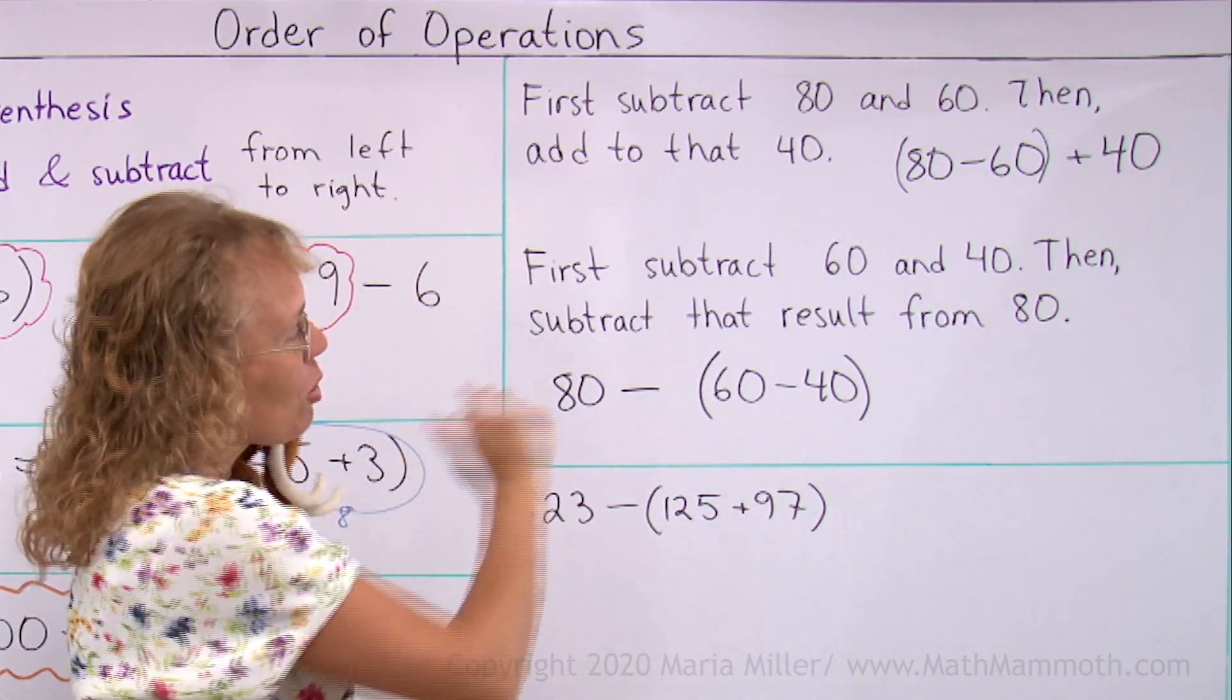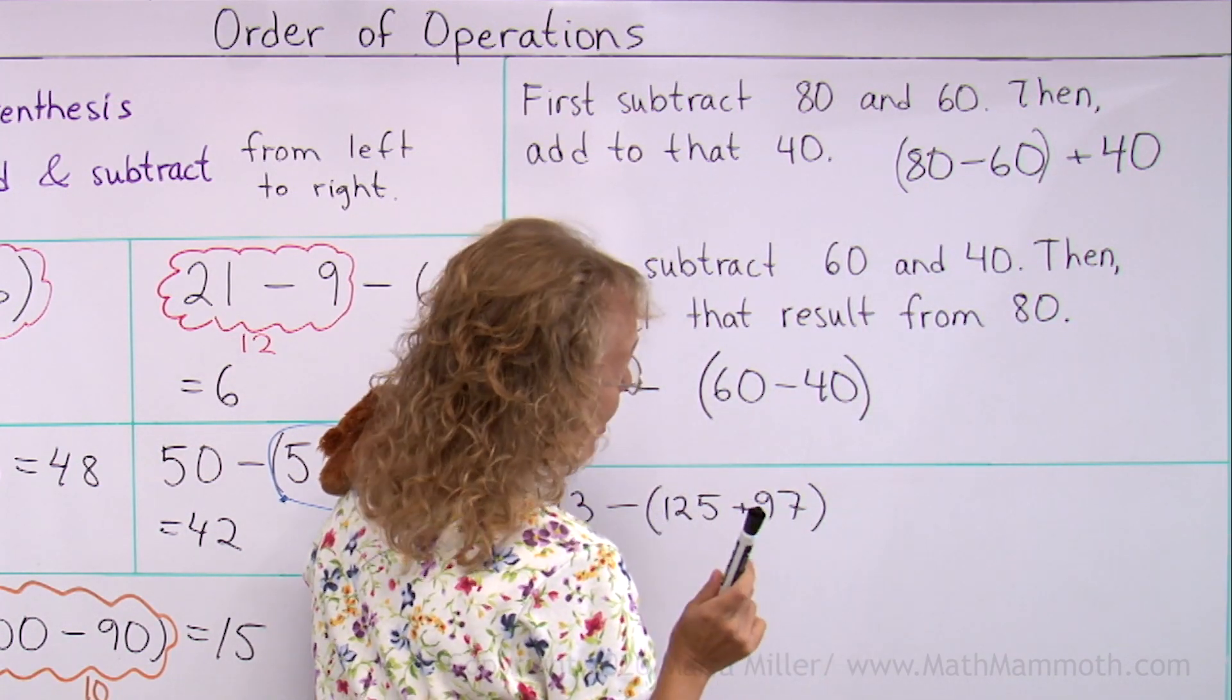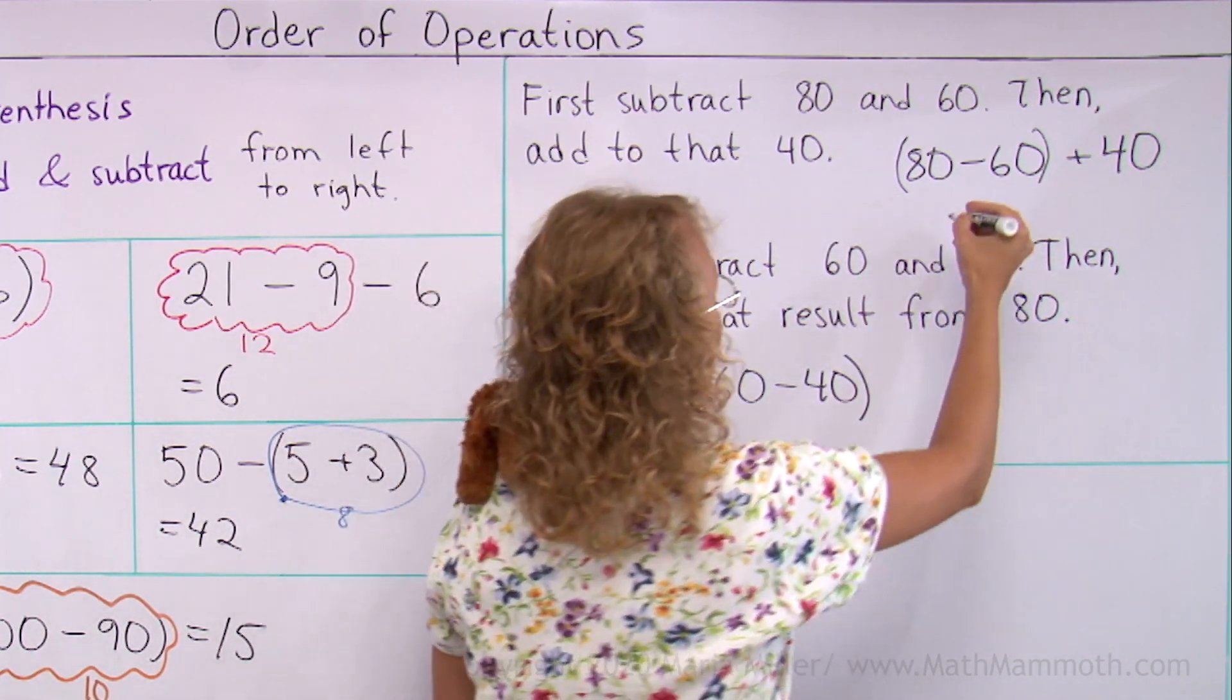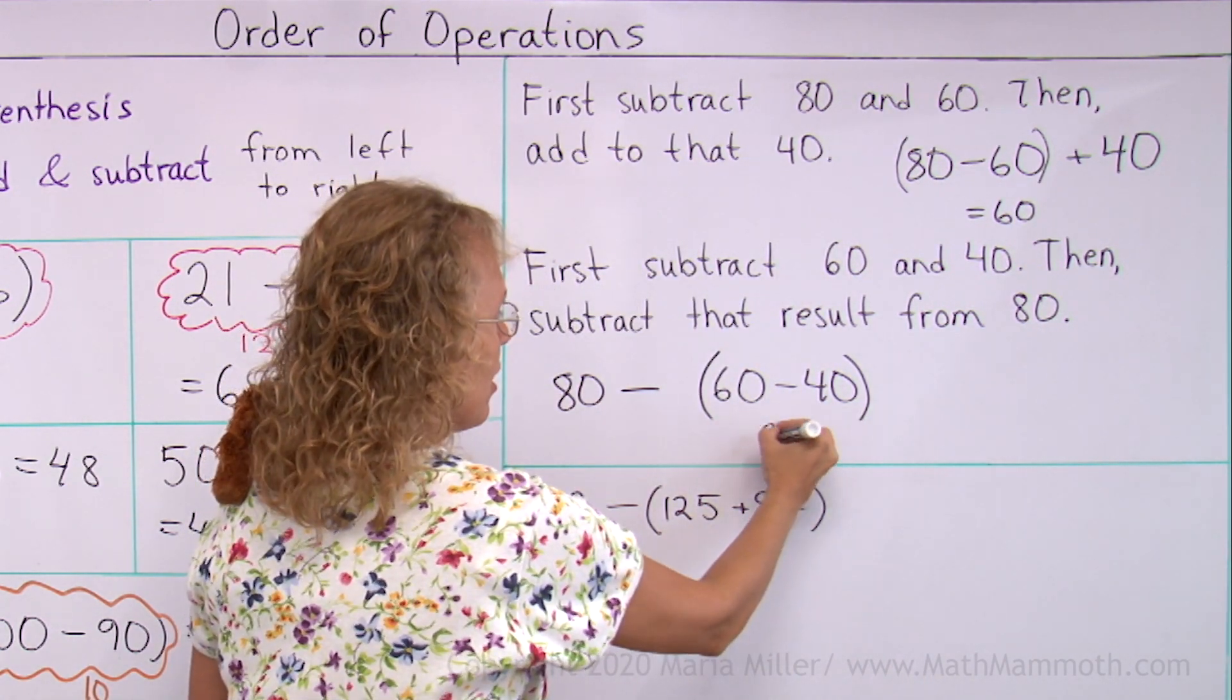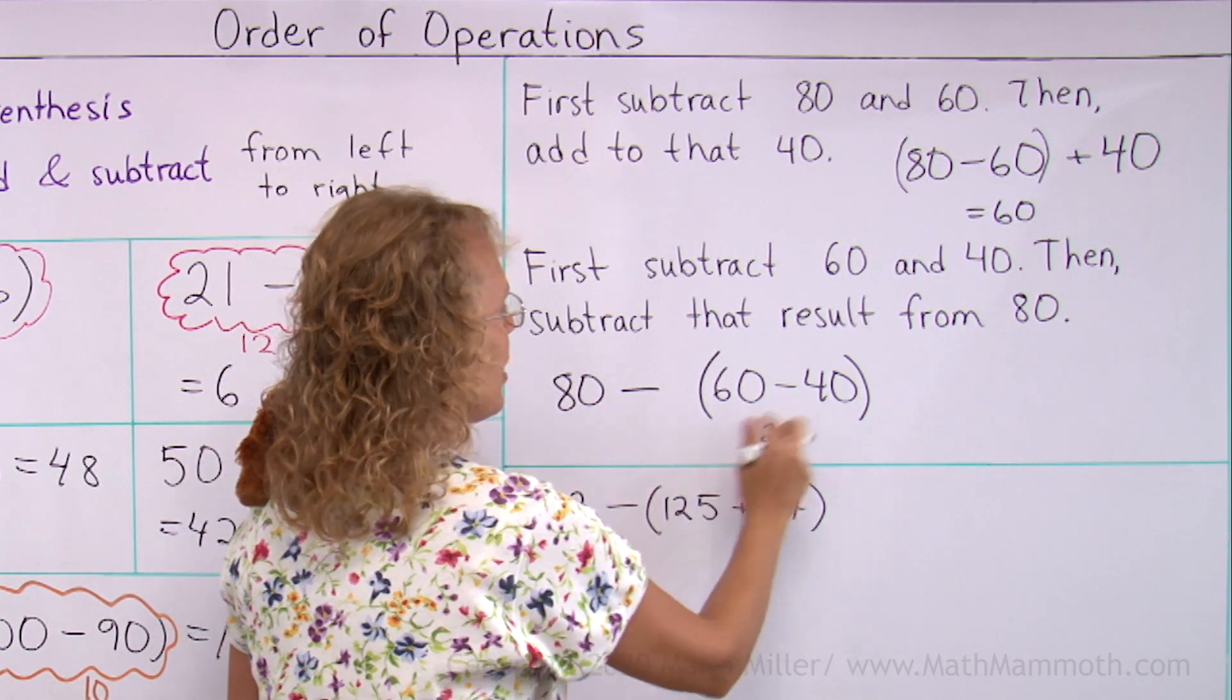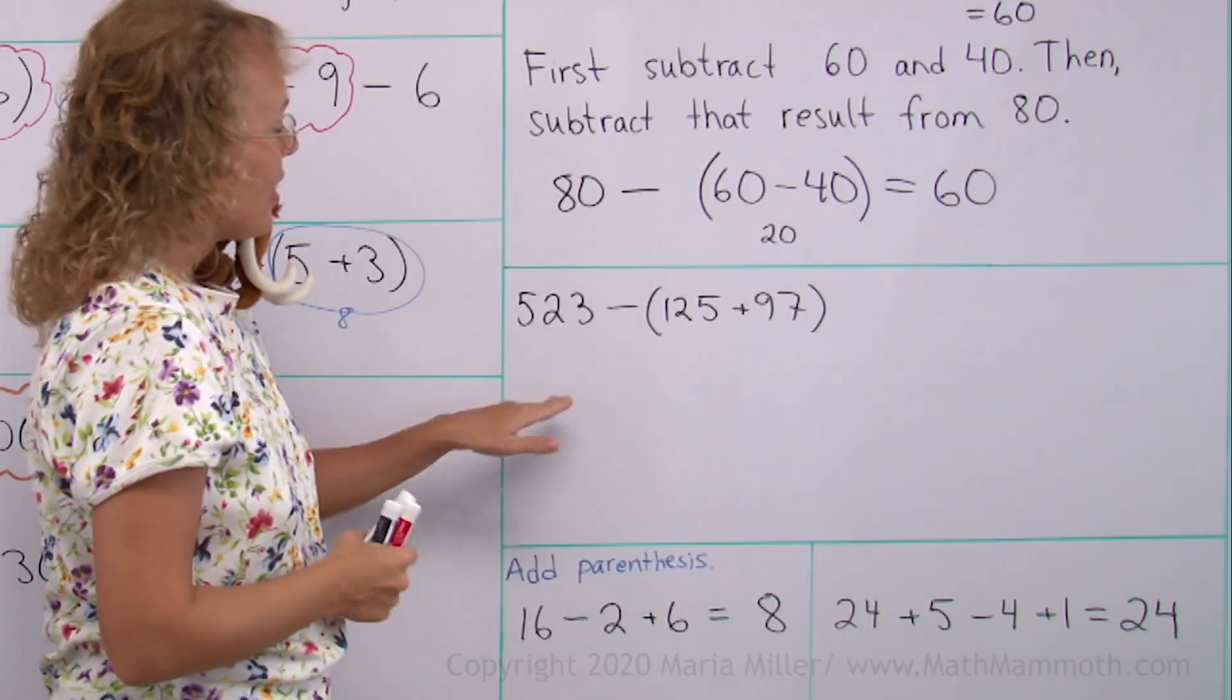And now, I guess we can also solve these. 80 minus 60 would be 20 plus 40 equals 60. Over here, we get this first, which is 80 minus 20 equals 60.